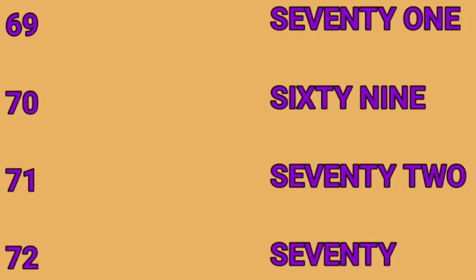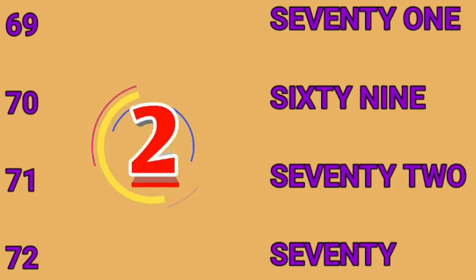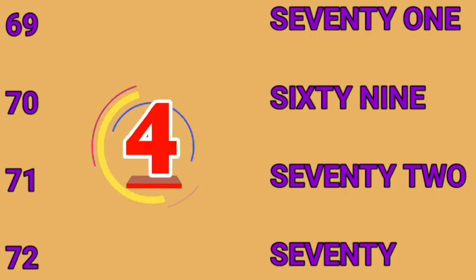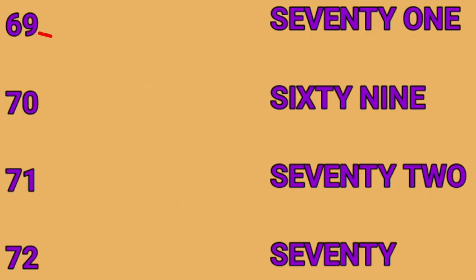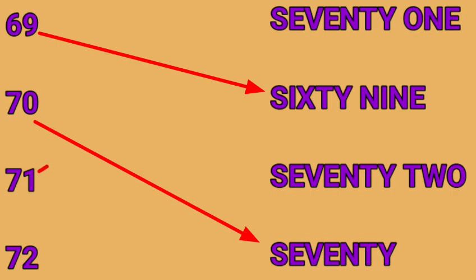69, 70, 71, 72. First one is 69. Second one is 70. Third one is 71. And the last is 72.